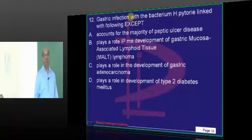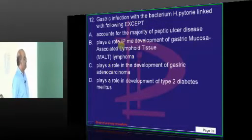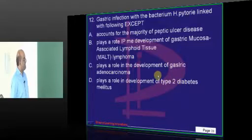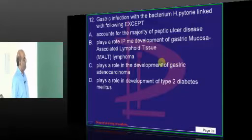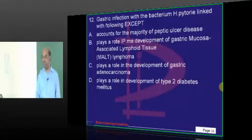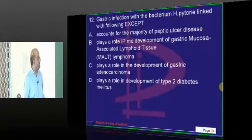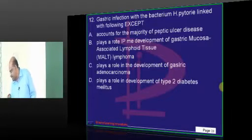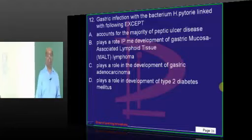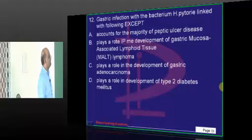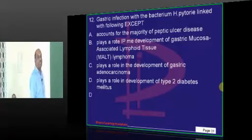H. pylori and MALTOMA — what does it lead to? Does it have any role in type 2 diabetes? Is it an etiological factor? Will it lead to adenocarcinoma? Will it lead to peptic disease in the majority of cases? Playing a role in type 2 diabetes is not the cup of tea of H. pylori. Coxsackie virus has got a role in type 2 diabetes.